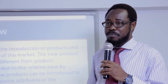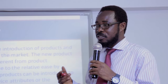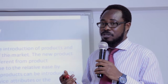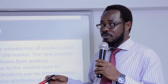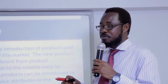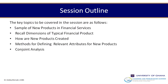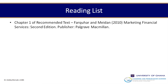Most new products introduced into financial services do not necessarily require technology — there have actually been one or two additions or subtractions of attributes. The session outline looks at: samples of new products in financial services, recall dimensions of a typical financial product, how new products are created, and methods for identifying relevant attributes when it comes to financial services. We also have the reading list.